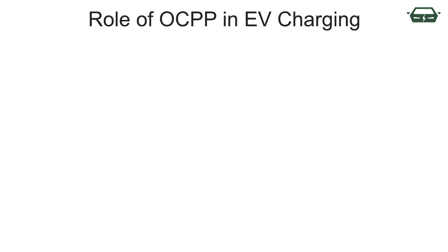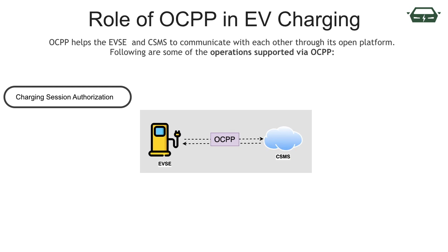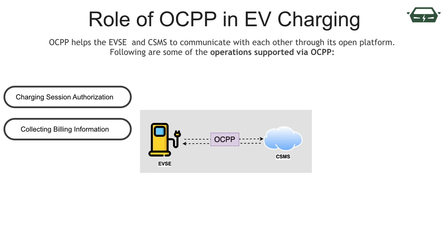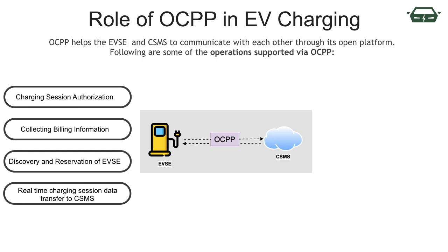Here are a few examples of operations supported via OCPP. Charging Session Authorization: pre-authorization is required at the start of a charging operation to identify and allow the EV user to use the charging service. Collecting billing information — providing charging session details to the backend system to calculate charges. User app functionality to locate charging stations and make reservations. Necessary data from the charging session is transferred to CSMS. Charging station operators can see the real-time status of all charging equipment — for example, which EVSEs are available, which are currently charging, or which are not working.